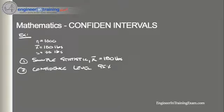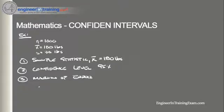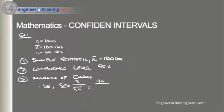Step three, we need to find the margin of error. The first thing is to find the standard error. Since we're using the mean as our sample statistic, SE is equal to S over the square root of N, which is equal to 30 divided by the square root of 1,000, which is equal to 0.95.